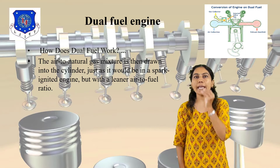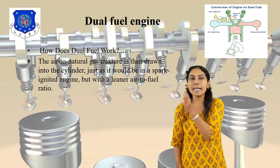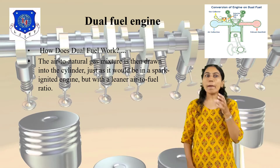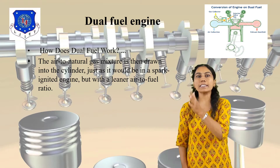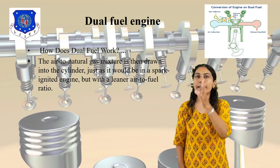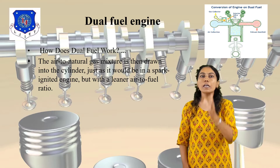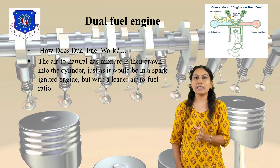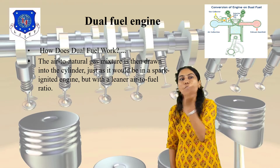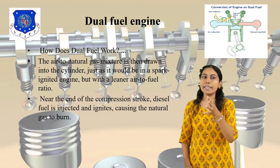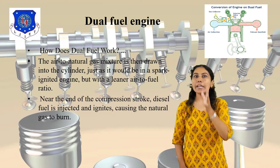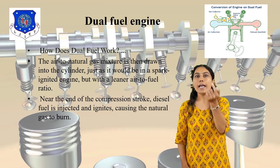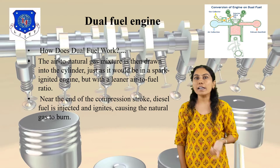This works just as it would in a spark-ignited engine. This air-to-natural gas mixer operates like an SI engine but with a lean air-to-fuel ratio. Near the end of the compression stroke, diesel fuel is injected to ignite the mixture, causing the natural gas to burn.